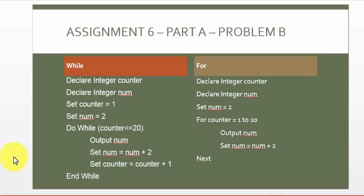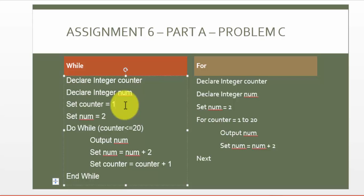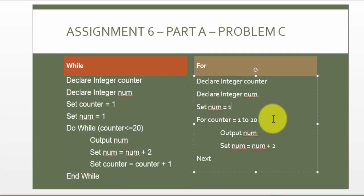Now let's do the odd number solution, which was actually Part C. If I use the while logic, the only change I'm going to make is to change the starting point of number to 1. That's it. I need to run the loop 20 times, incrementing by 2. But since the starting point is 1, after the next increment of 2, the next number will be 3. If I start with 2 the next number is 4; if I start with 1 the next is 3. That's the only change needed in both approaches.